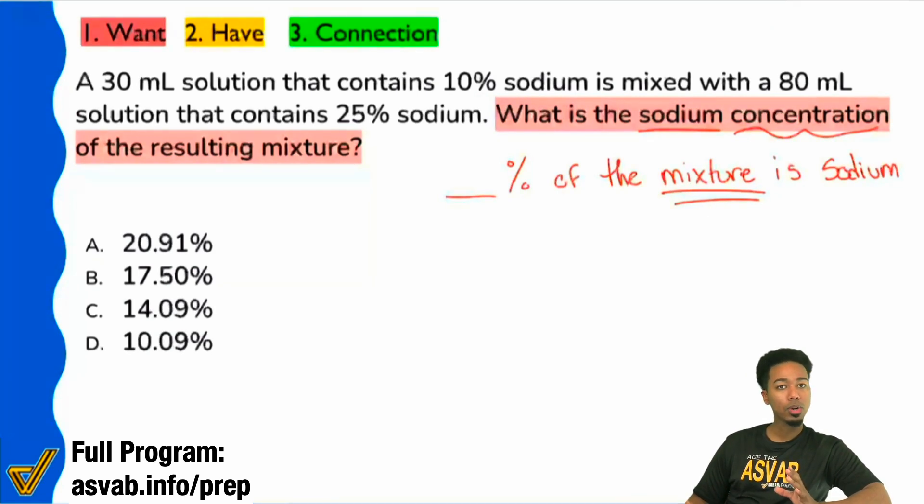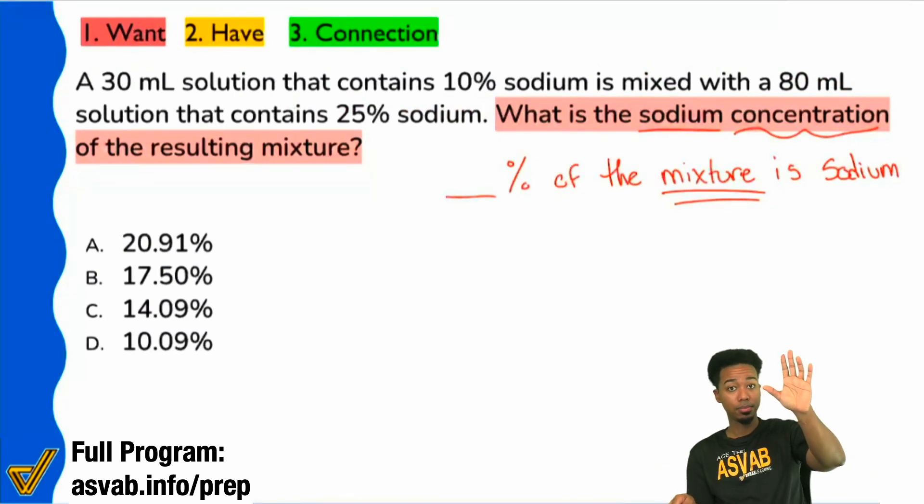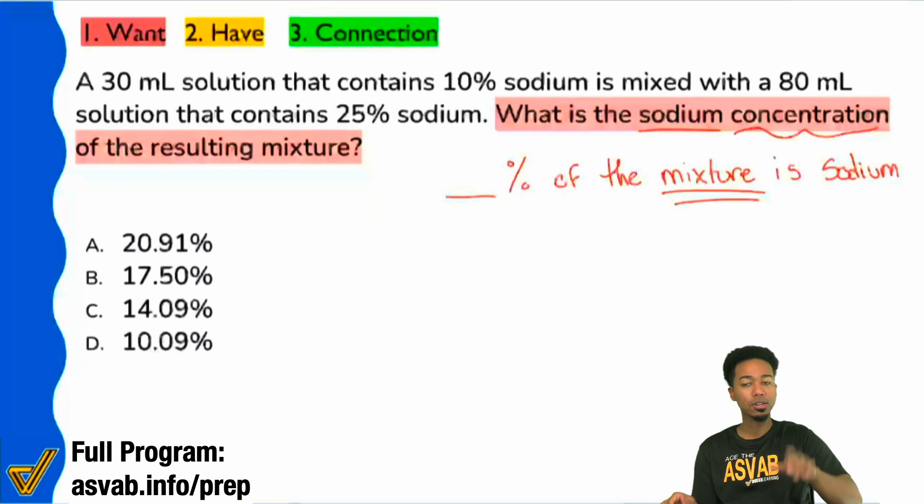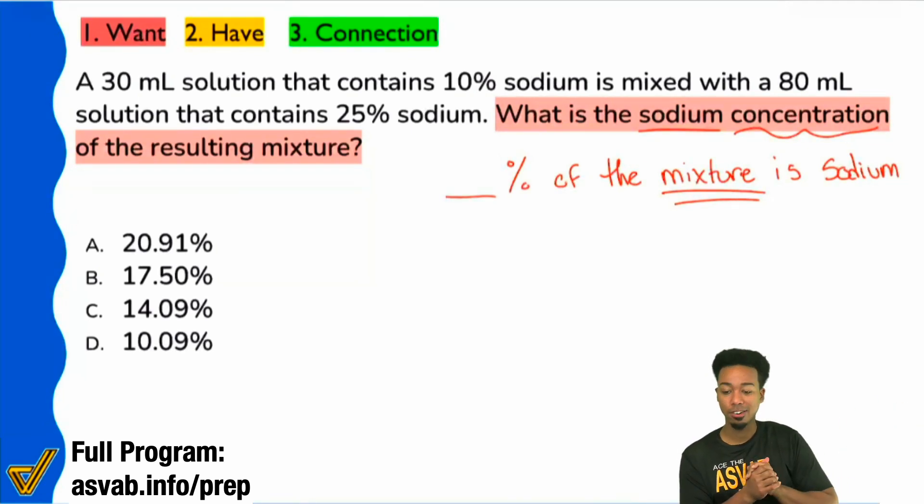So here's what we want to read, everybody. What we can read here is that you see that you have one solution here and the percent of sodium, then you have a second solution and the percent of that that's sodium. Everybody, does that make sense? Do we see that information there? We have solution one, 10% sodium, solution two, 25% sodium, and we're looking for that total mixture, the percent in there. Do we see all of that formula? Even though we don't know how to do it yet, do we see the pieces? Do we see the pieces?